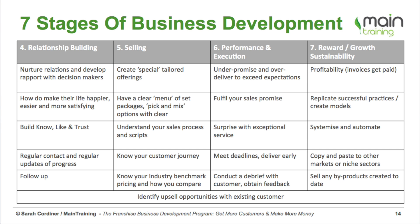Number six is our performance and execution stage. We've got the job, they've paid us, and now we actually have to deliver. You may have heard the term under-promise and over-deliver, so that you're always exceeding expectations. Fulfill your sales promise and make sure you surprise customers with exceptional service, not just satisfactory service. We want to meet our deadlines — deliver early or on time. We also want to get feedback and testimonials from customers, as testimonials and referrals bring in lots of money. Encouraging customers to be honest helps us build a more successful company.